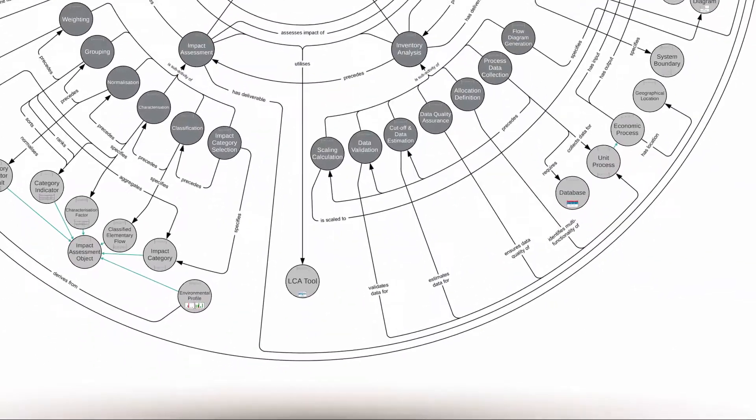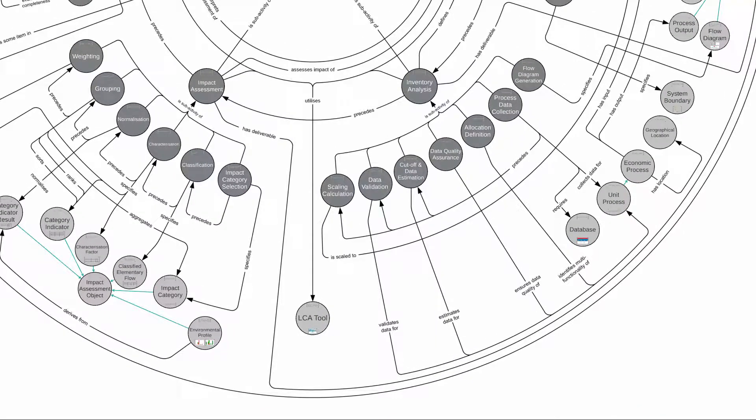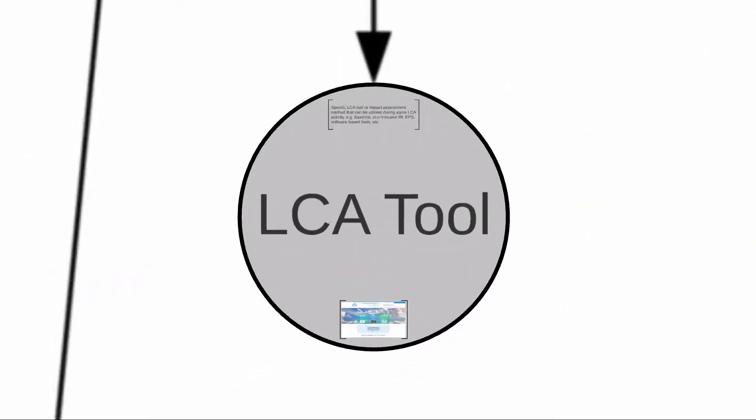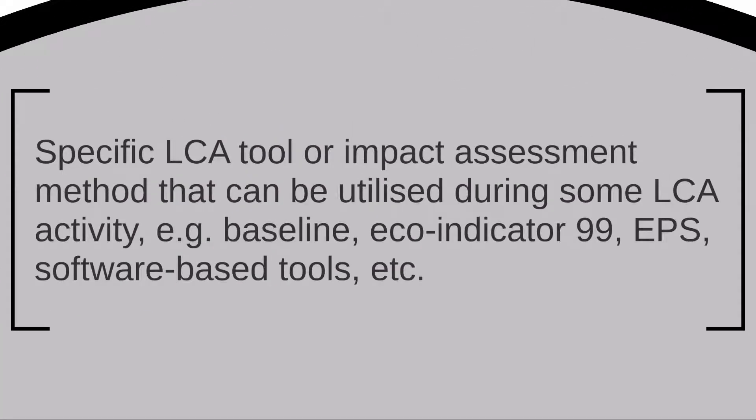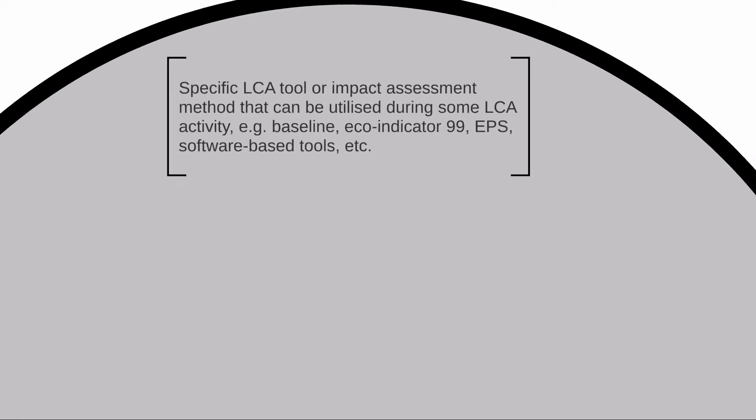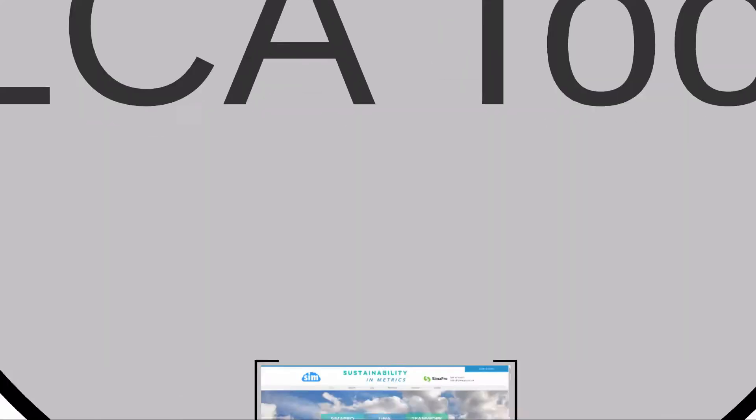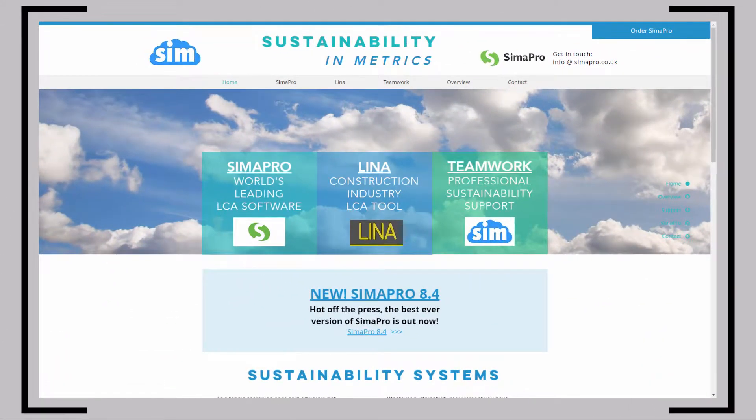In practice, for conducting impact assessment, you have a choice of different tools you can apply, like the so-called ECO indicator 99, EPS which is short for environmental priorities strategies, and other ones too. For instance, it could be some comprehensive approach supported by the SimuPro software, which we'll make use of in the case of the Kettle example.